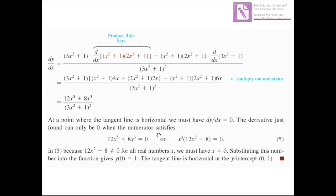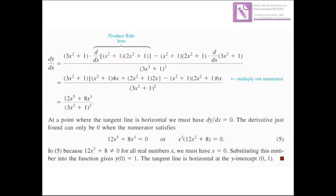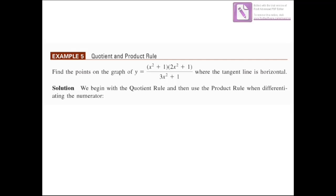Setting the numerator equal to 0: 12x⁵ + 8x³ = 0. Factor out x³: x³(12x² + 8) = 0. So either x³ = 0 or 12x² + 8 = 0. From 12x² + 8 = 0, we get x² = −8/12, which has no real solution since a square cannot be negative. Therefore x = 0 is the only solution. Substituting x = 0: y(0) = (0+1)(0+1)/(0+1) = 1. The tangent line is horizontal at the point (0, 1).